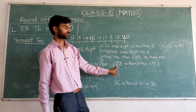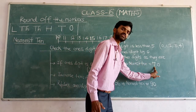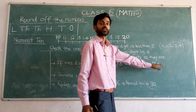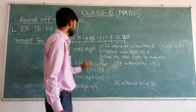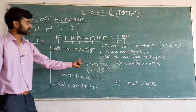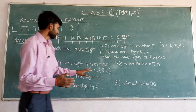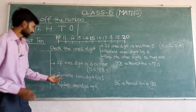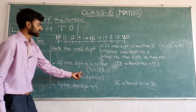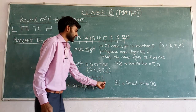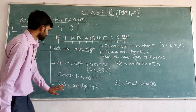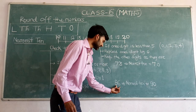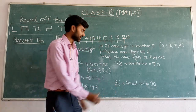The tens digit is 7, so the tens digit remains 7. So the nearest ten of 73 is 70. Second rule: if the ones digit is 5 or more — meaning 5, 6, 7, 8, or 9 — then increase the tens digit by 1 and replace the ones digit by 0.